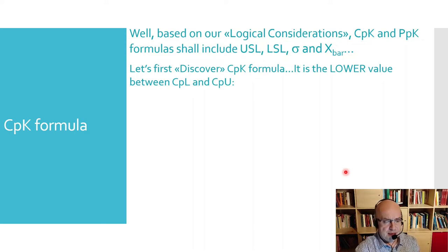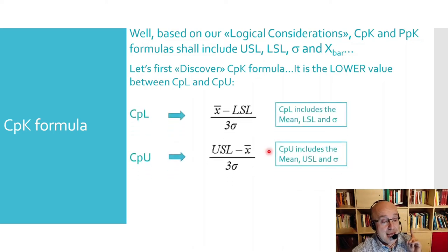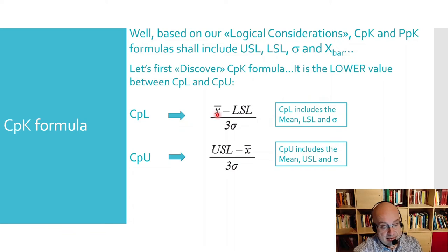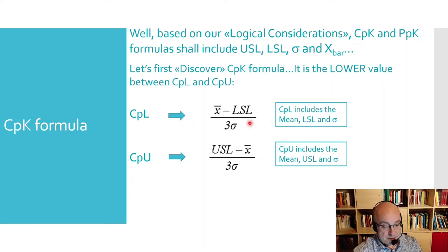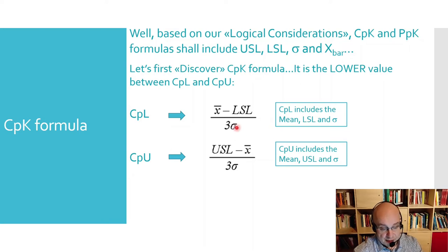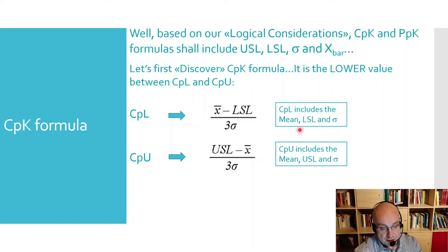CPK is the lower value between CPL and CPU — two additional indexes. CPL is X-bar minus the lower specification limit divided by three sigma, while CPU is the upper specification limit minus X-bar divided by three sigma. Both terms include all the components we identified: sigma at the denominator, X-bar at the numerator, CPL includes LSL, and CPU includes USL. Since CPK is the lower of the two, CPK considers all four terms — exactly what we expected from our logical considerations.